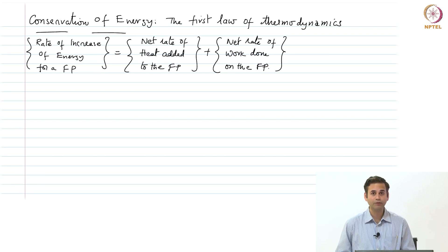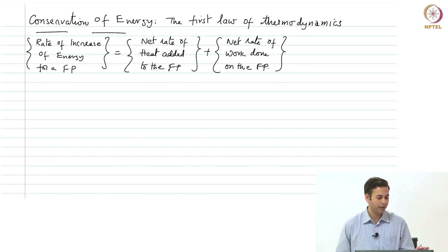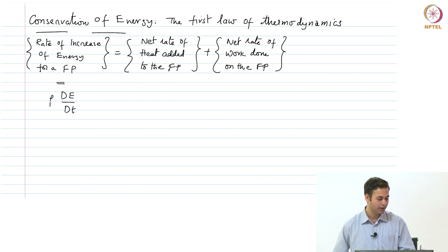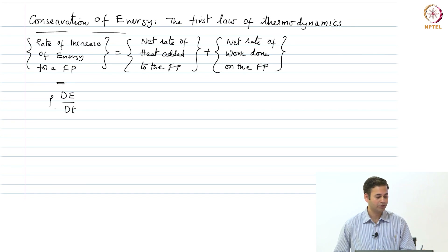Just like before, we can write the rate of increase of energy on a unit volume basis. This gives us rho times dE/dt, where E is the stored energy of the fluid particle, and dE/dt is its rate. Multiplying by density gives us the rate of increase of energy on a volume basis.